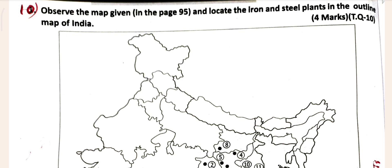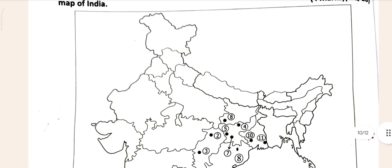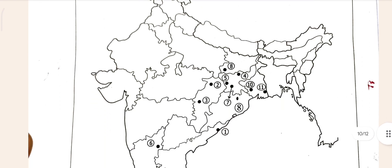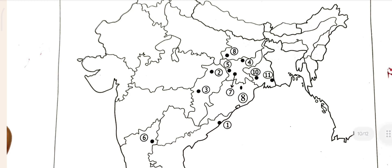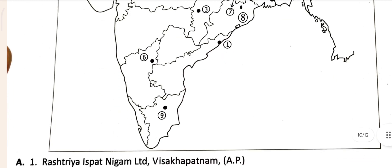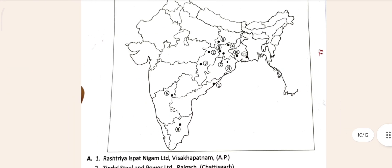If it is complete, let's go to the tenth question: 'Observe the map given and locate the iron and steel plants in the outline map of India.' You can see the steel plants listed: the first one is Xantra, second in Chhattisgarh, third also in Chhattisgarh, fourth in Jharkhand, fifth also Jharkhand, sixth in Bengaluru, seventh also Jharkhand, eighth in Bihar, and also one in Odisha. Ninth one is in Tamil Nadu, tenth in Bengal, and eleventh also in Bengal.